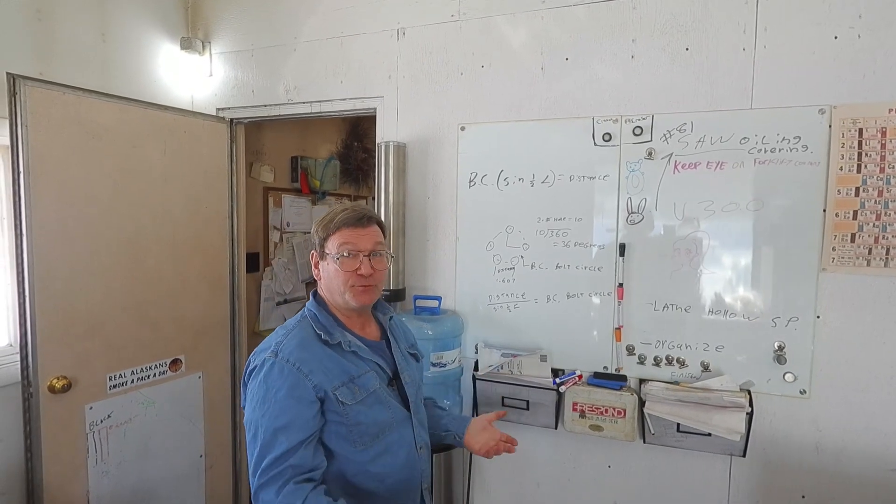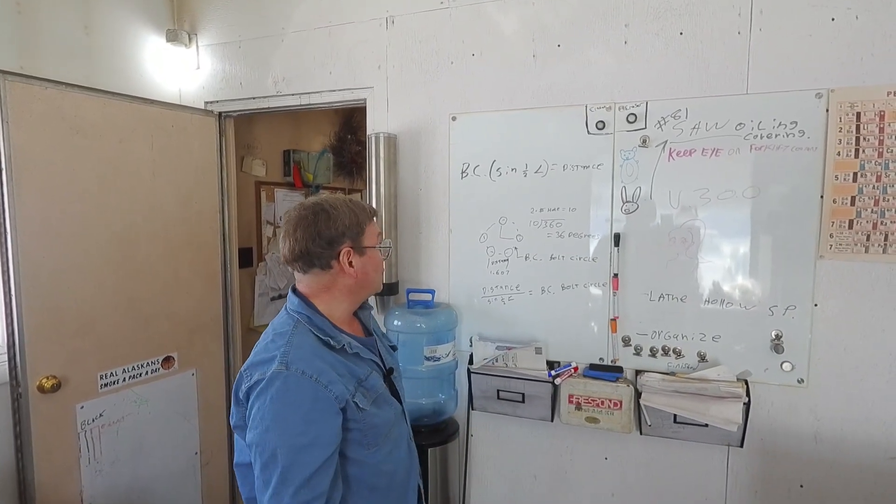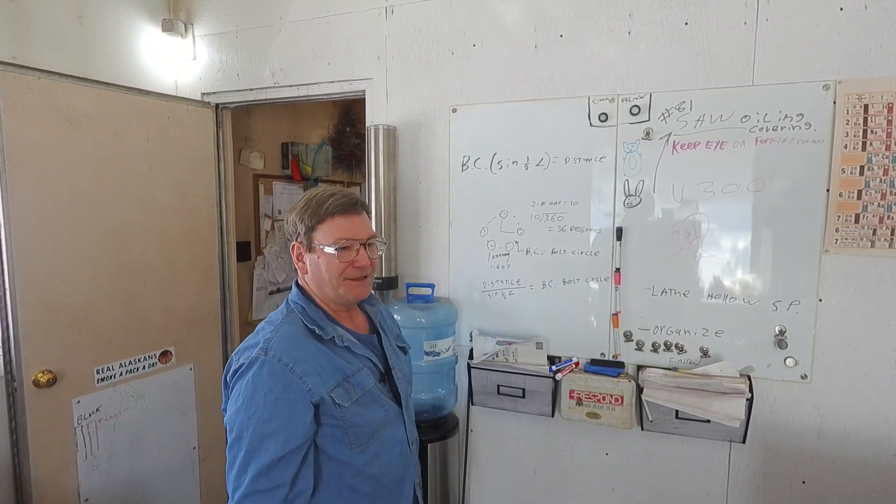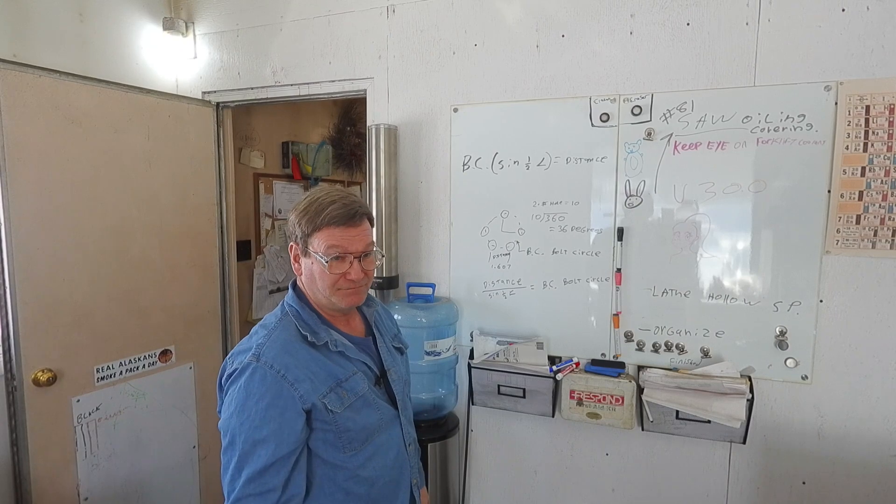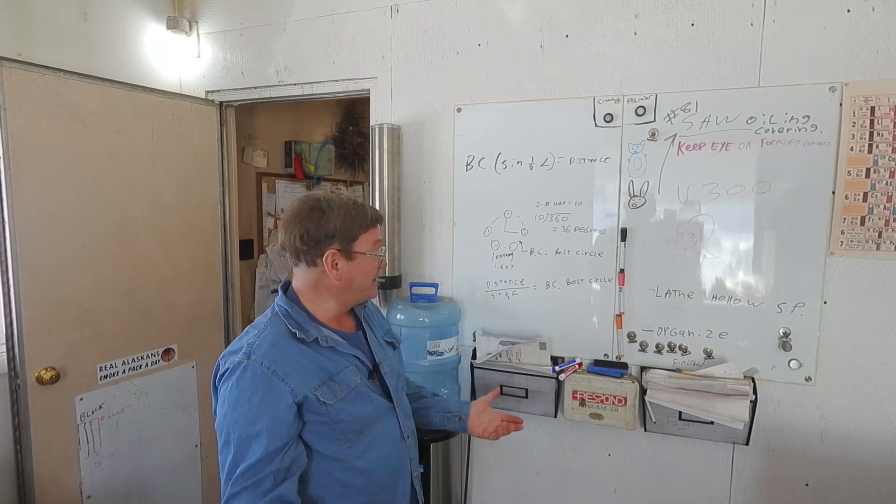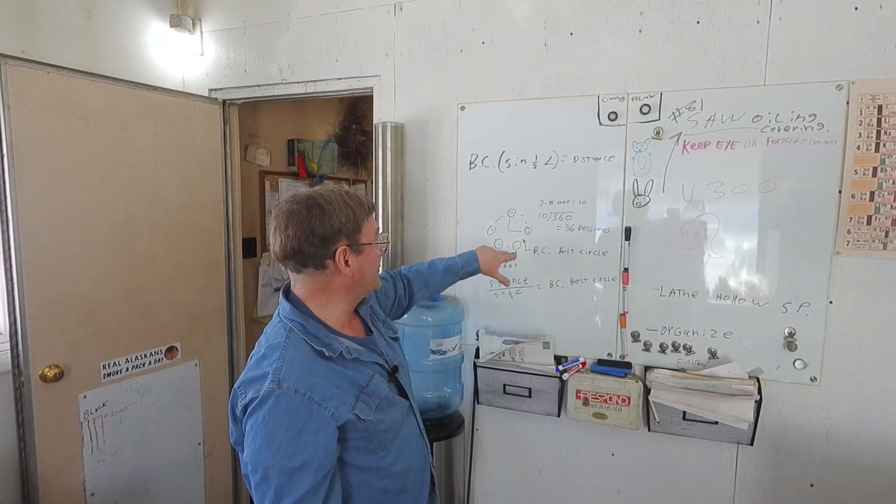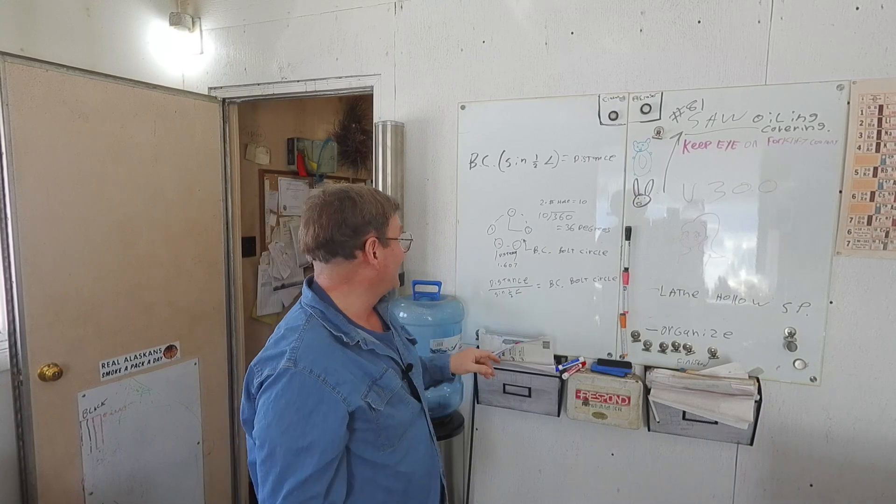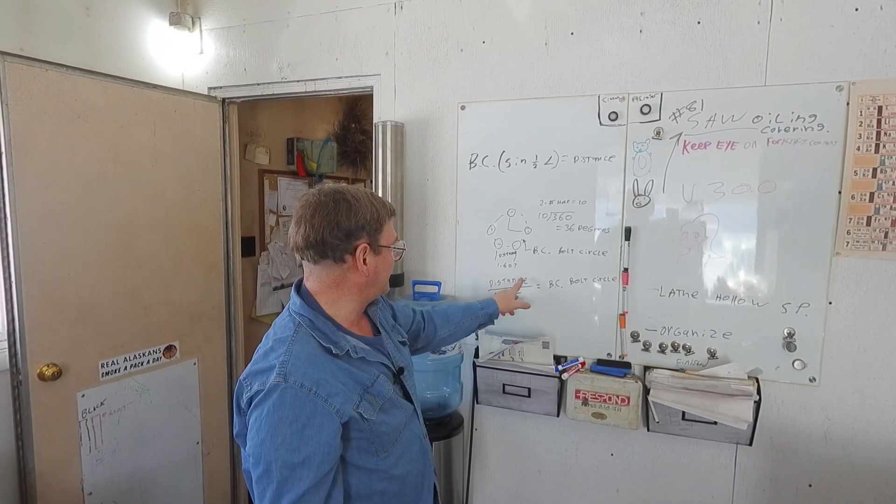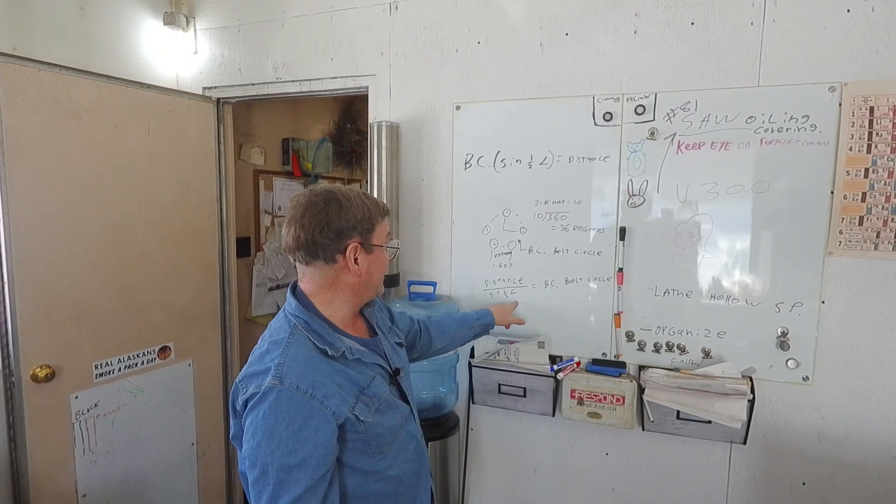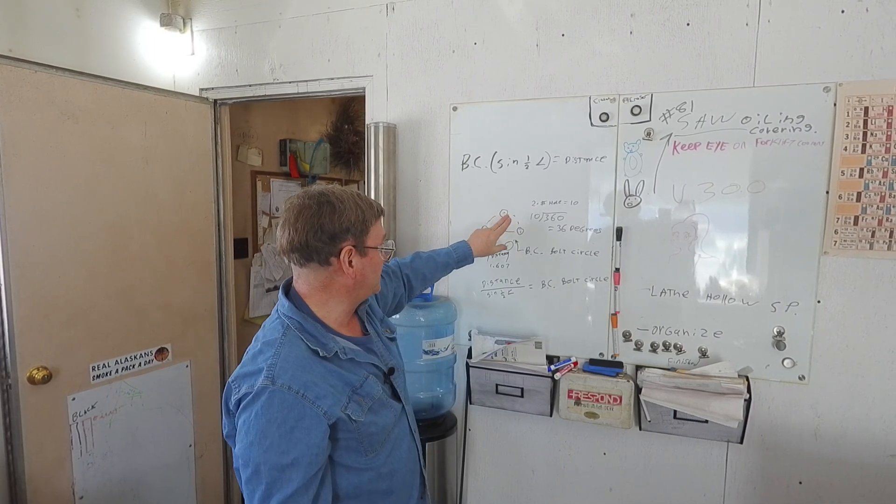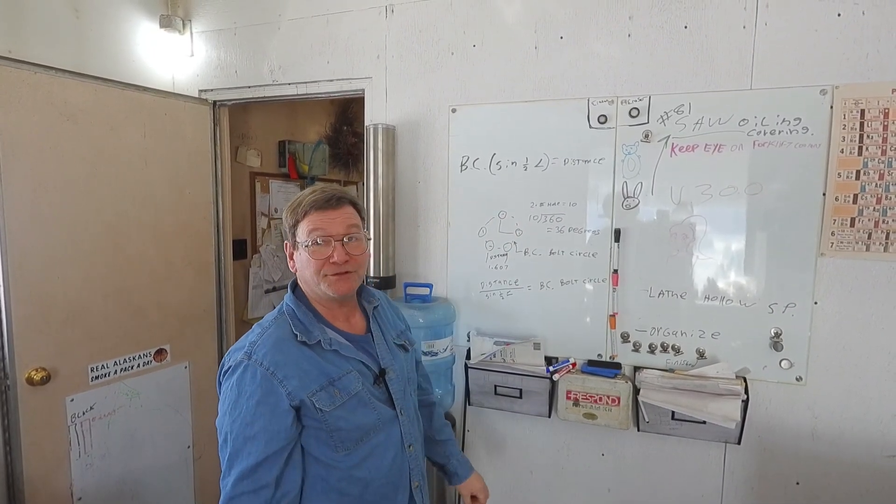Now we have the other question on this, which was initially mentioned in the comments about measuring a bolt circle directly if it was an odd number. So odd number, we want to know what the bolt circle is so that we can put this in on our dividing head. What we've measured is the distance. So now take your distance, divide it by the sine of half the angle. Again, the sine of half the angle in between the two holes, and that will equal your bolt circle.